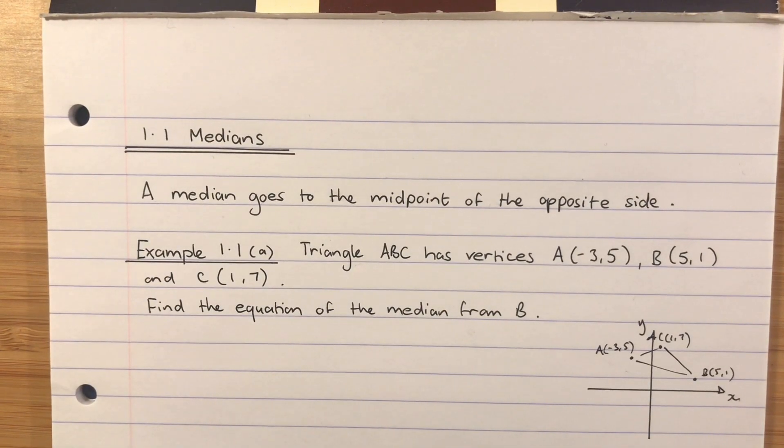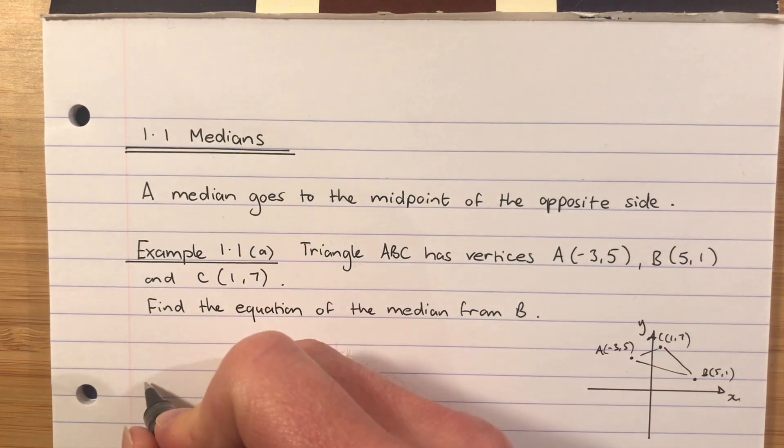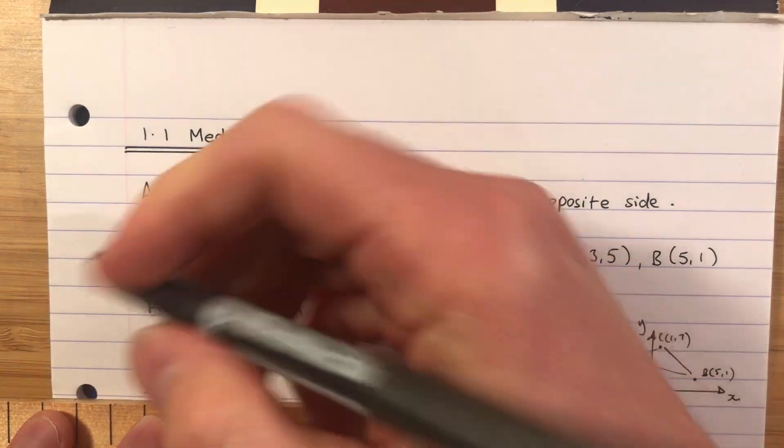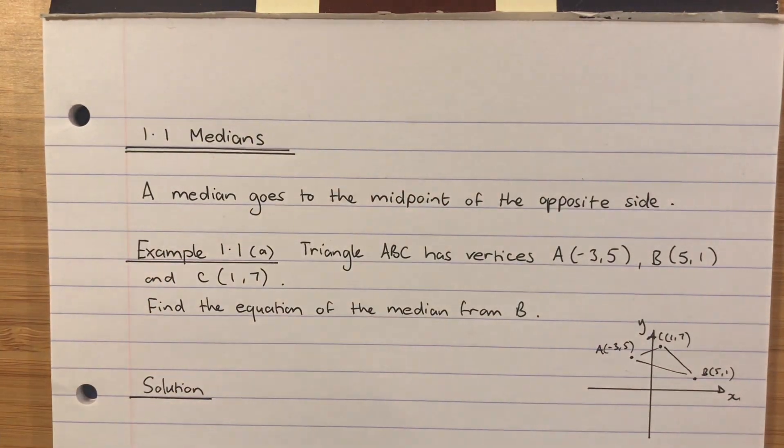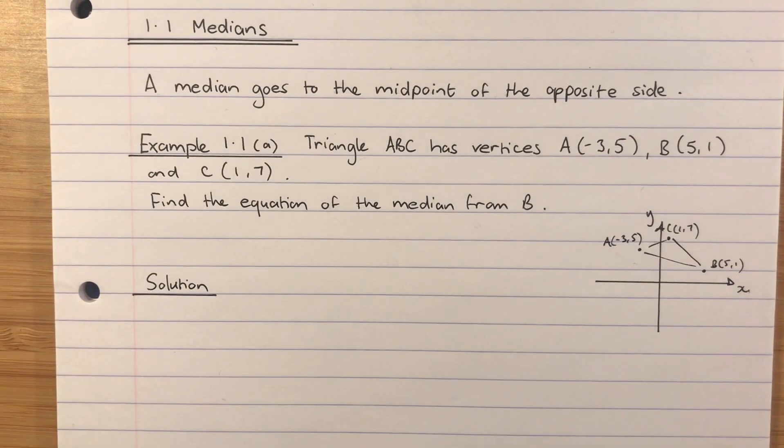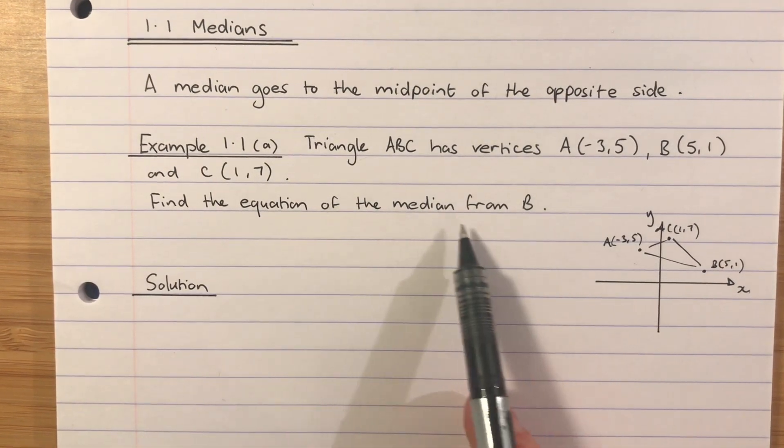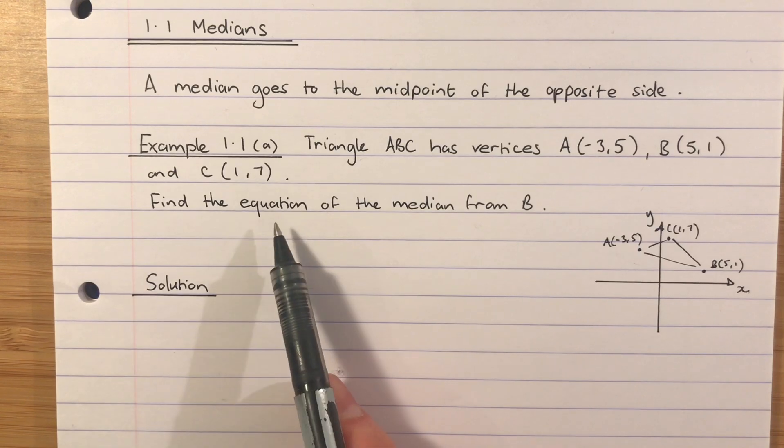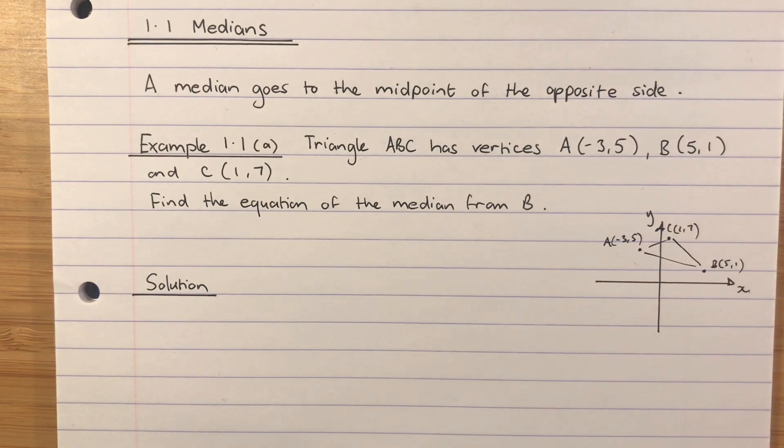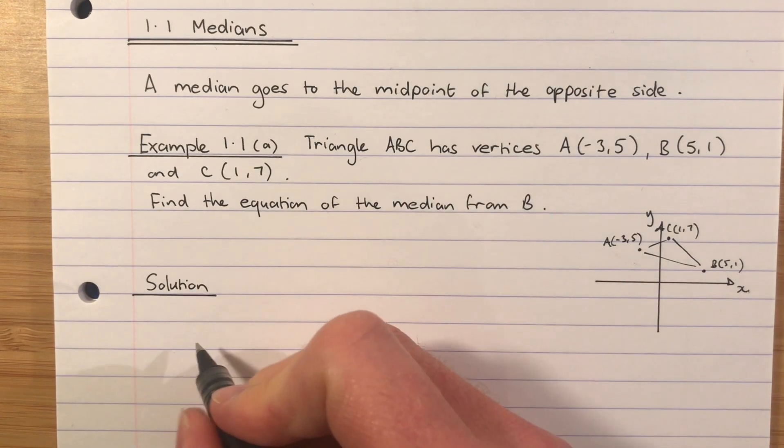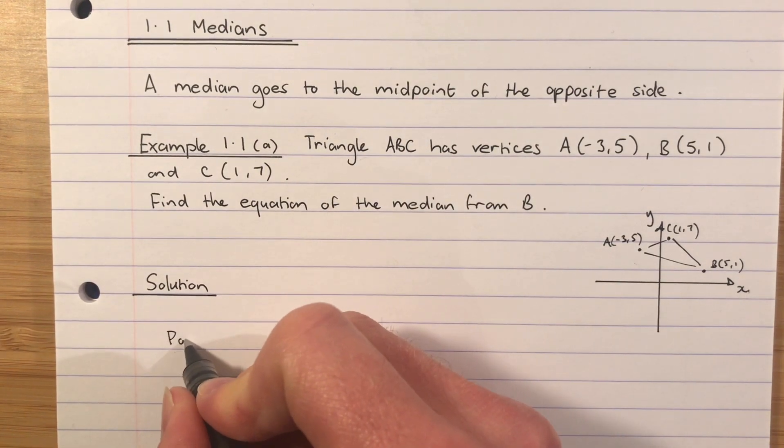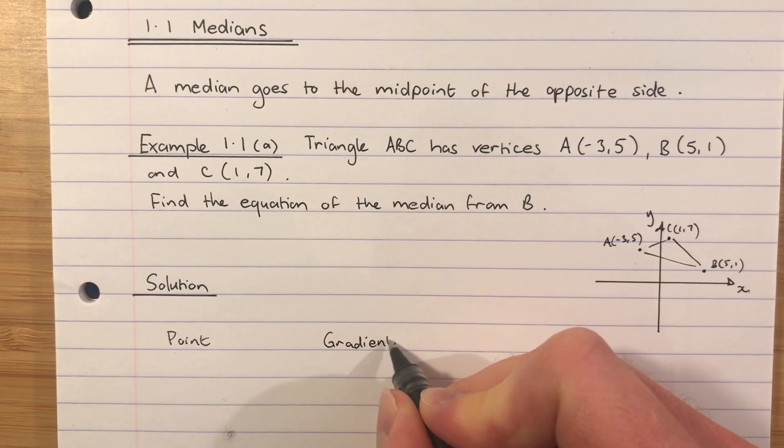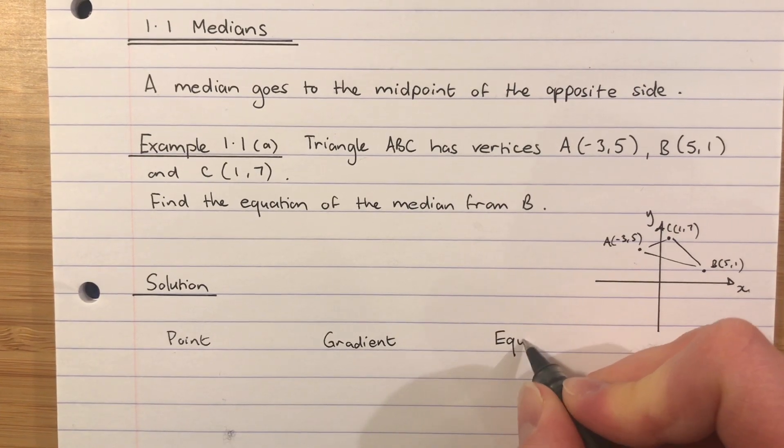The question wants us to find the equation of the median from B. So let's go and do our solution over here. First thing to note is this: in Higher Math, same as in National 5, if you're asked to find the equation of any type of straight line, doesn't matter whether it's a median or anything else, a parallel line, a perpendicular line, if it's find the equation, we are going to be doing y - b = m(x - a), which means we're going to be taking three headings.